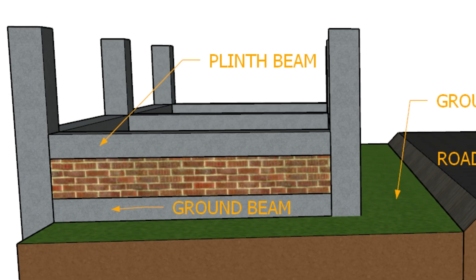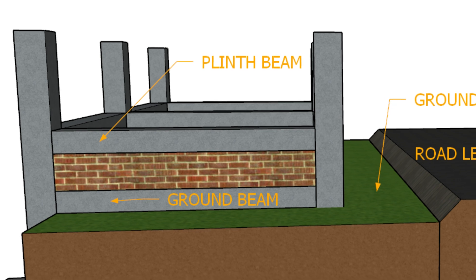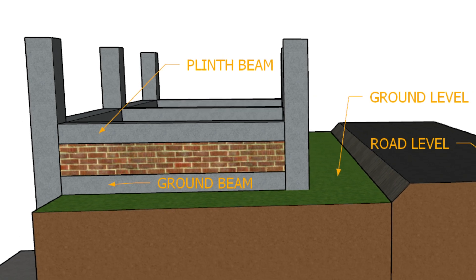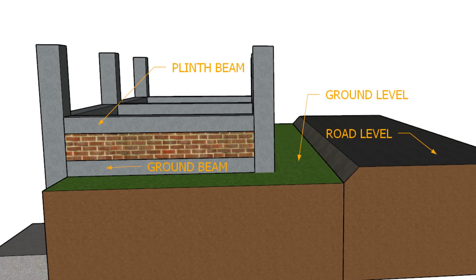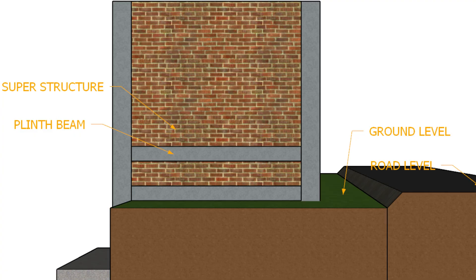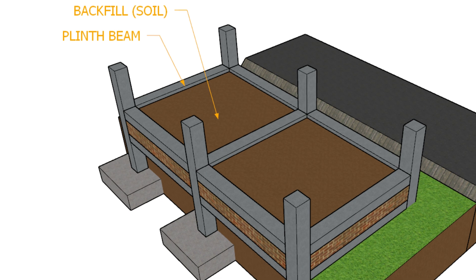That's why a plinth beam is provided just above the ground level — to provide a rigid base for the superstructure, prevent uneven settlement, distribute wall loads uniformly, and ensure lateral stability. In short, the plinth beam acts as the starting platform for your superstructure.